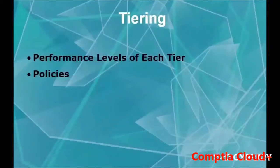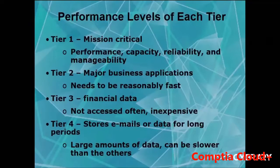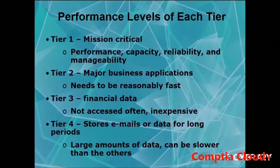Tiering is split into four tiers based on performance level. Tier 1 is mission critical — it requires performance, capacity, reliability, and management, with fast servers, large storage pools, low latency, and high redundancy and fault tolerance. Tier 1 is used when information needs to be delivered quickly. Companies like Google, Amazon, and Netflix would use Tier 1 to give their customers what they need.